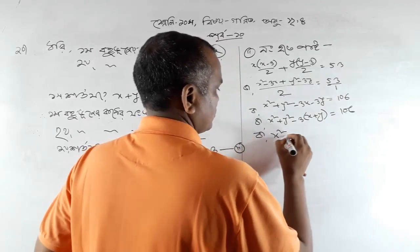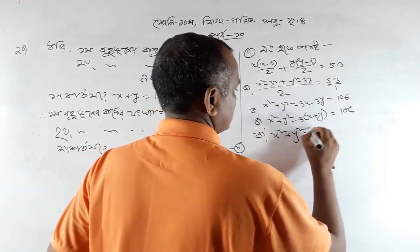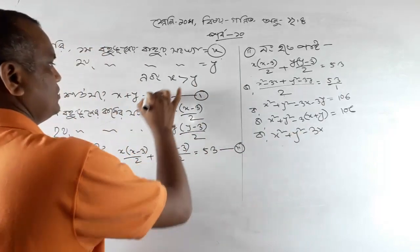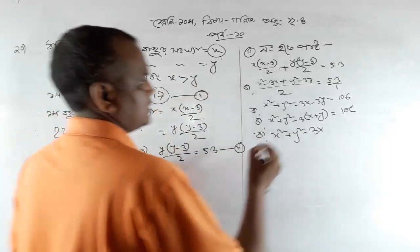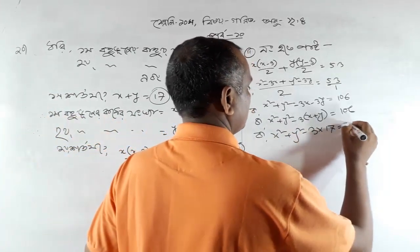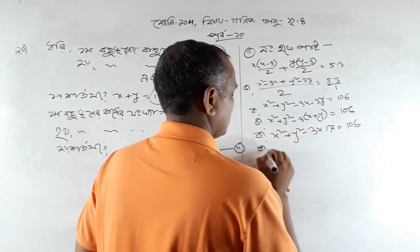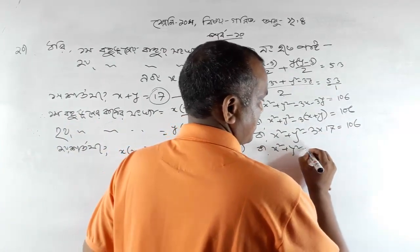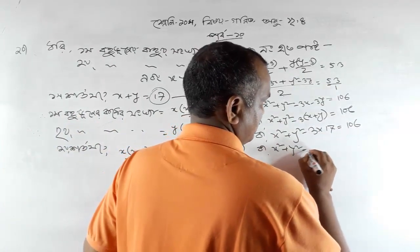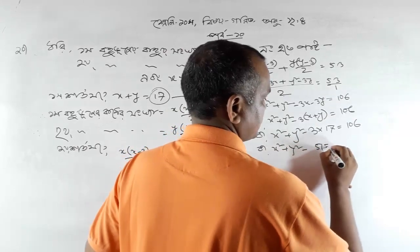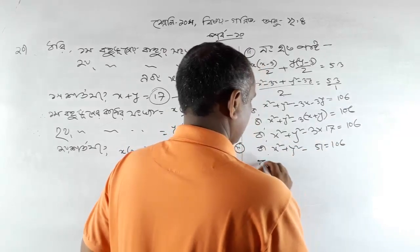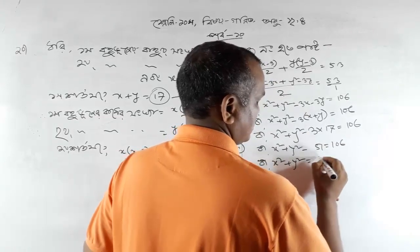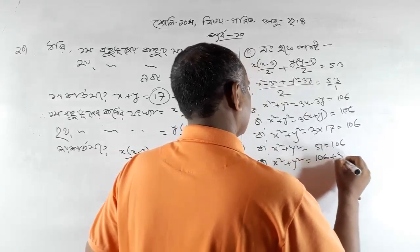By x square plus y square, minus 3 into x plus y — this is about 1300. By x square plus y square, minus 30 is about 140. By x square plus y square, minus 30. Why? By x square plus y square is 106.